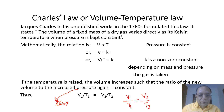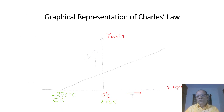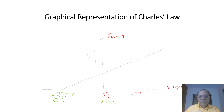Now the graphical representation of Charles' law. Temperature is plotted on the x-axis and volume increase is plotted on the y-axis. At 0°C, the gas occupies some volume indicated by a point on the axis, and as the temperature rises, there is a straight line.